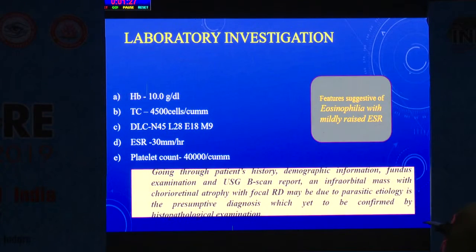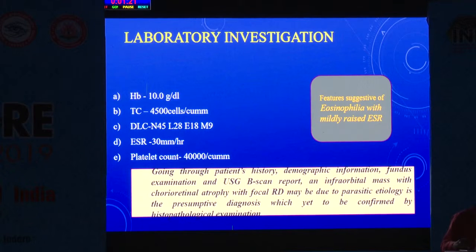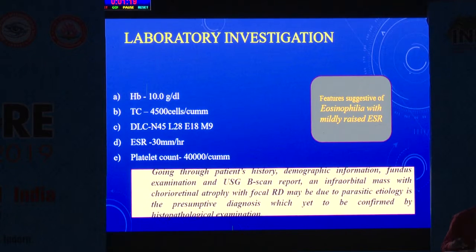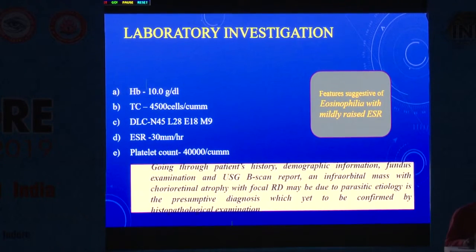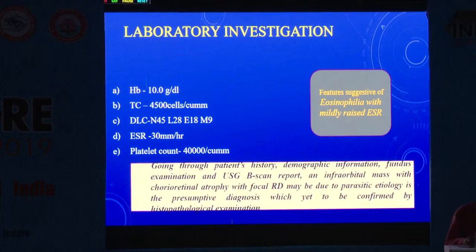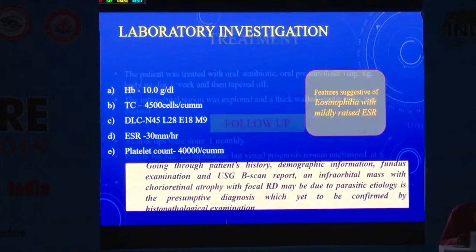On laboratory investigation, hemoglobin was 10, mild eosinophilia was present, and ESR was high. Based on the patient's history, demographic information, fundus examination, and B-scan report, the presumptive diagnosis was an infraorbital mass with chorioretinal atrophy with focal retinal detachment, possibly due to parasitic etiology — yet to be confirmed by histopathological examination.